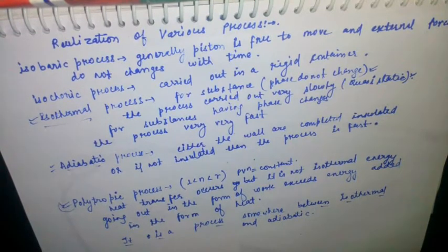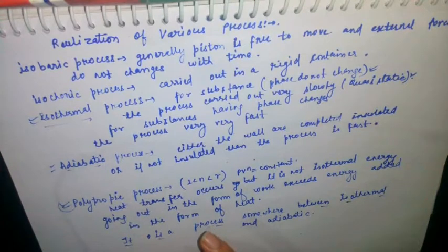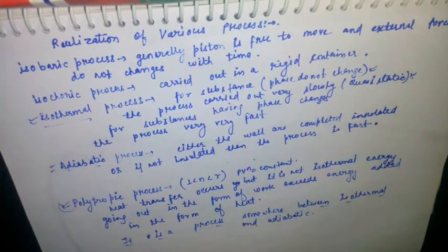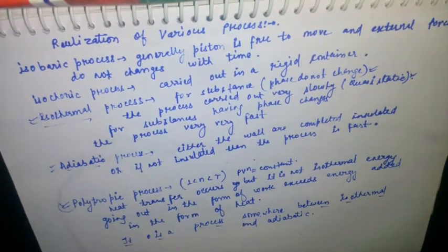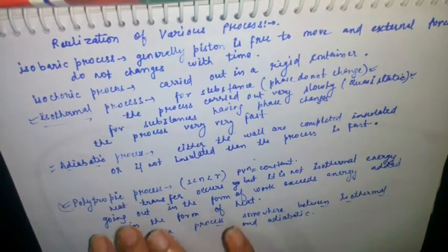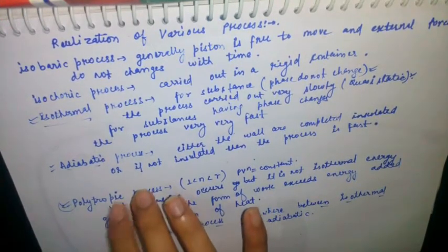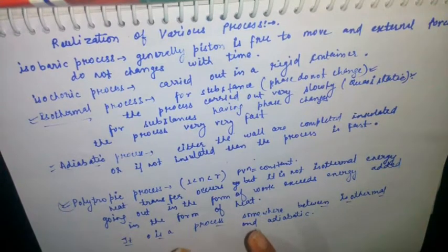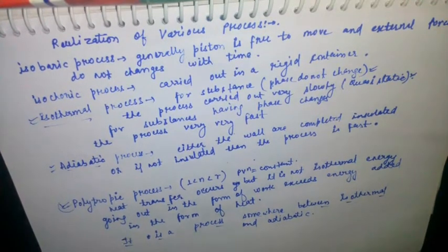For the polytropic process, it is a process somewhere in between adiabatic and isothermal, and heat transfer occurs. It is not isothermal because energy going out in the form of work exceeds the energy added in the form of heat. The curve of the polytropic process always lies in between the adiabatic and isothermal processes. Thank you.